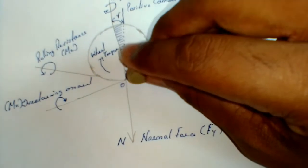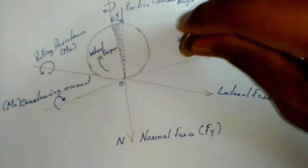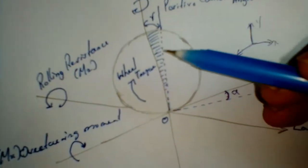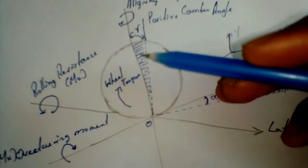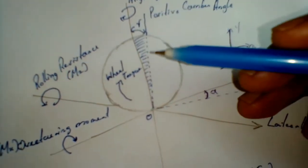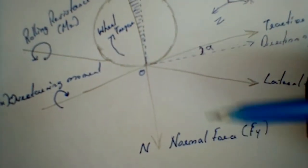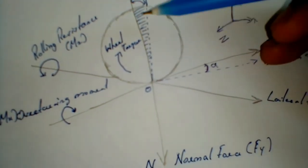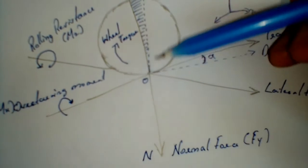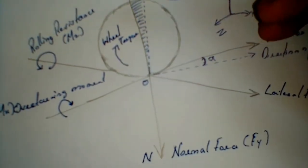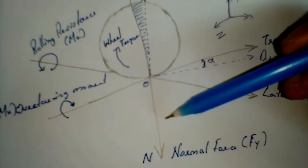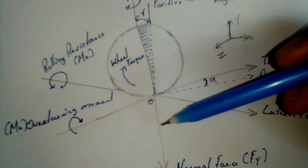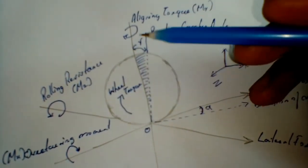In the Y-axis, the force is called the normal force, which is due to the weight of the vehicle distributing to the tire and to the ground. You can see the normal force acts through the perpendicular plane of the X-axis, which is Y. The moment corresponding to the Y-axis is the aligning torque.